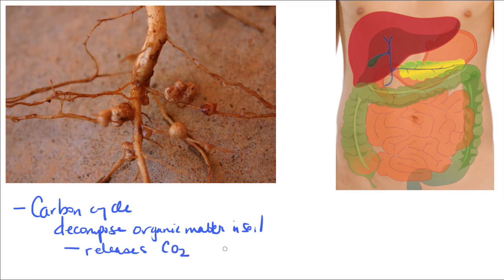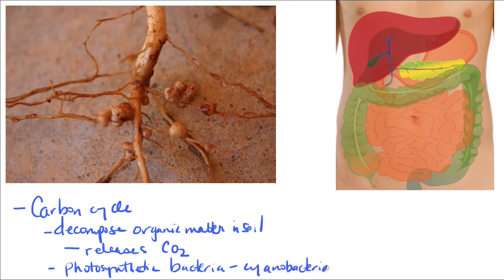There are other organisms as part of the carbon cycle who actually can photosynthesize. We think of plants, but there are bacteria that are photosynthetic, and we call them cyanobacteria. They're actually taking in CO2 from the environment and turning it into chemical energy just like plants do. These are very vital roles that these microorganisms play.